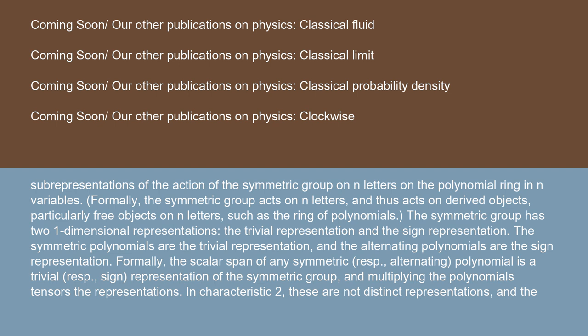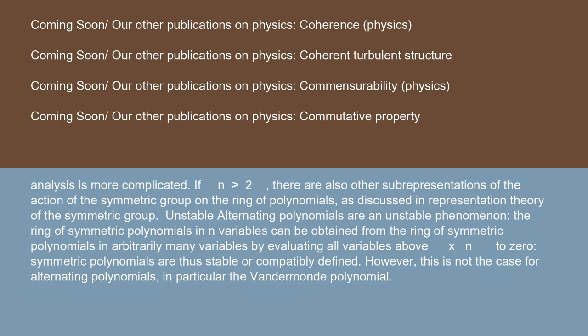In characteristic 2, these are not distinct representations, and the analysis is more complicated. If n is greater than 2, there are also other sub-representations of the action of the symmetric group on the ring of polynomials, as discussed in the representation theory of the symmetric group.